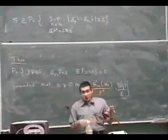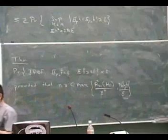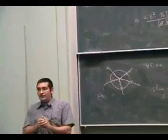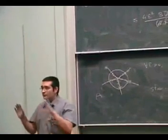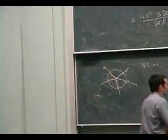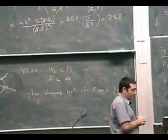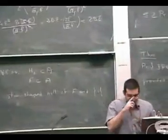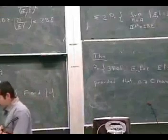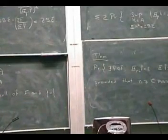I won't be able to actually compute things for you because the computations are rather difficult. All I want to do — I'll try to convince you of two things. One thing is that from the entropy point of view, we have to show two things: that going to the star-shaped hull doesn't increase the class by much — that's the first step.